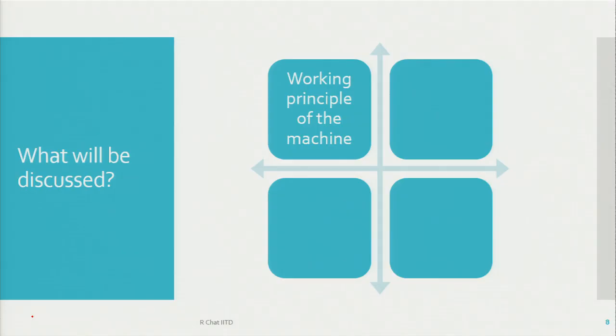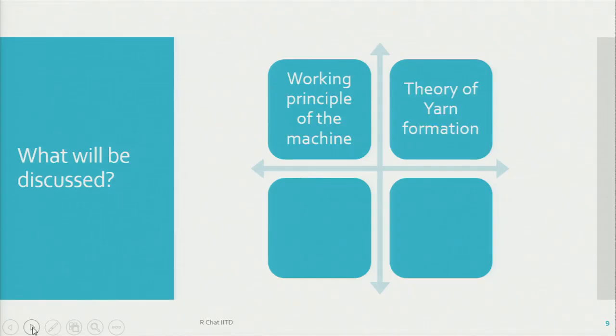We will study all these spinning systems one after the other. First of all, the working principle of each technology will be covered. We will also know about the machines — the hardware part that machine manufacturers have developed — including machine configurations, various components, and working principles. This will be followed by the theory of yarn formation: how yarn is formed by these technologies. We all know that in ring spinning, the technique used to produce the yarn is known as the twisting technique.